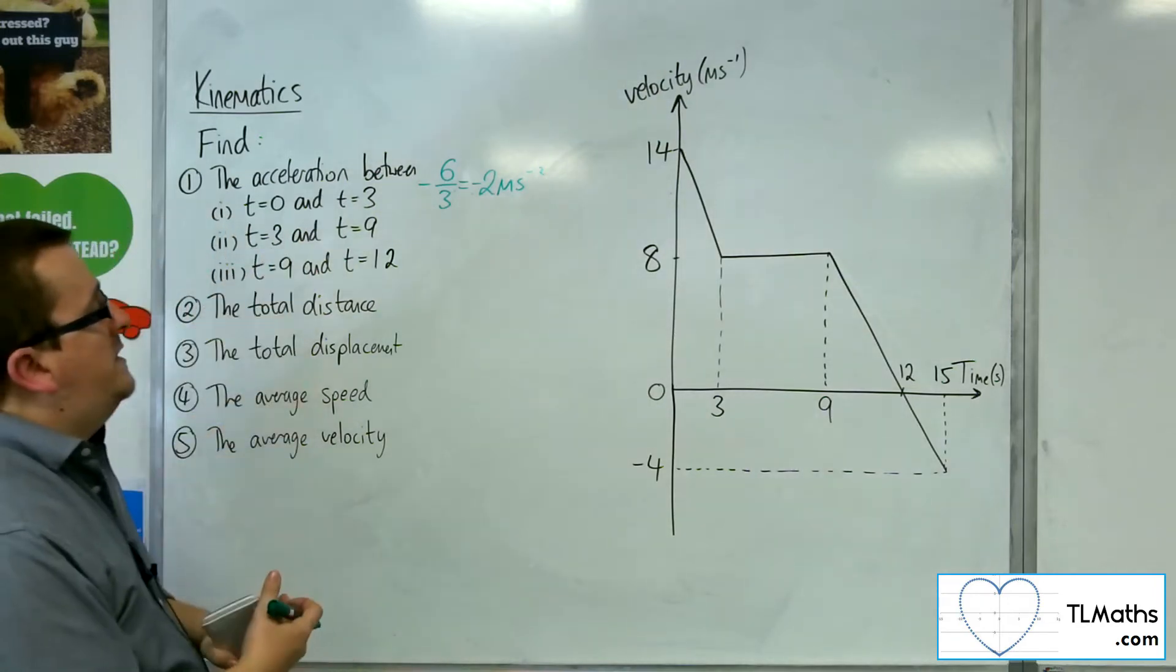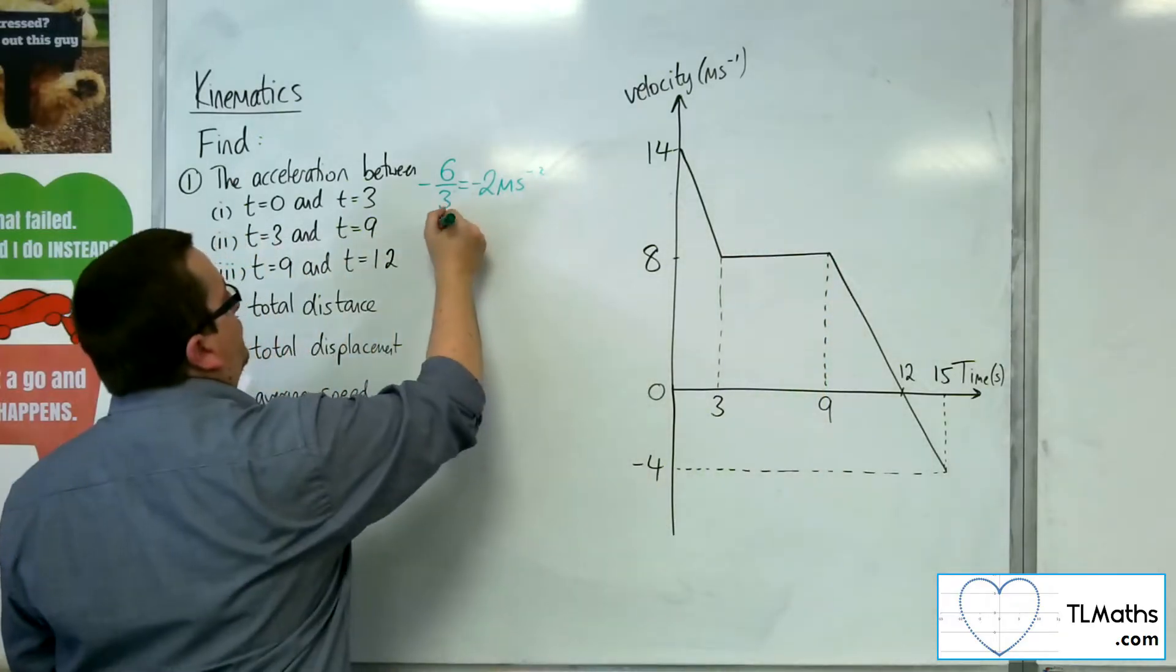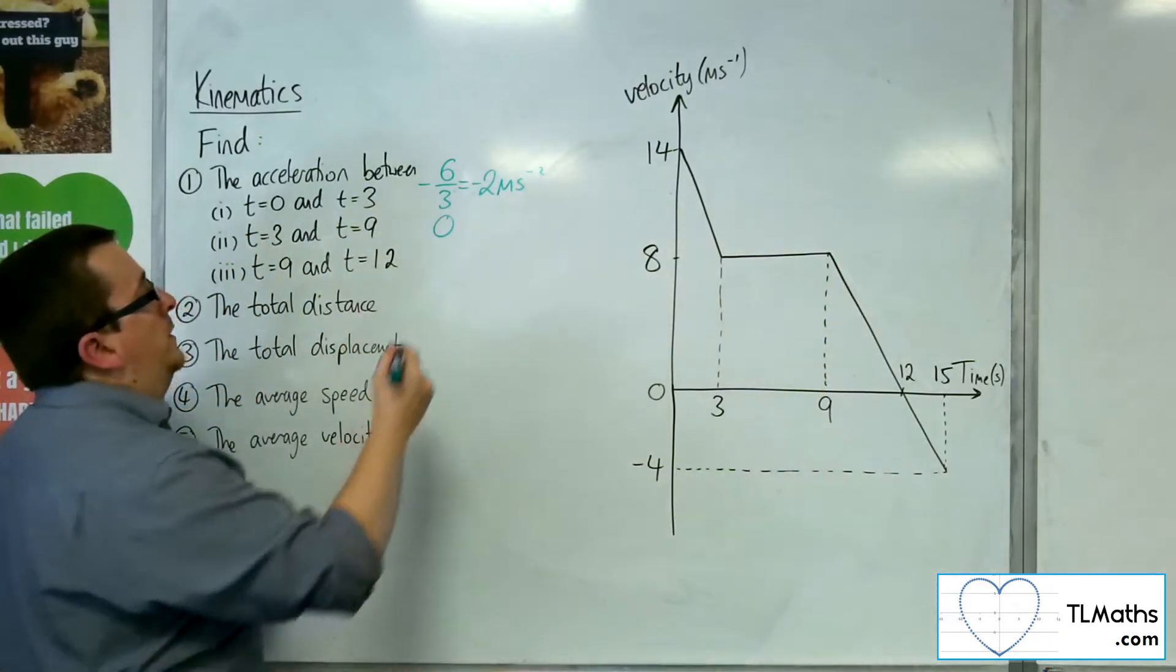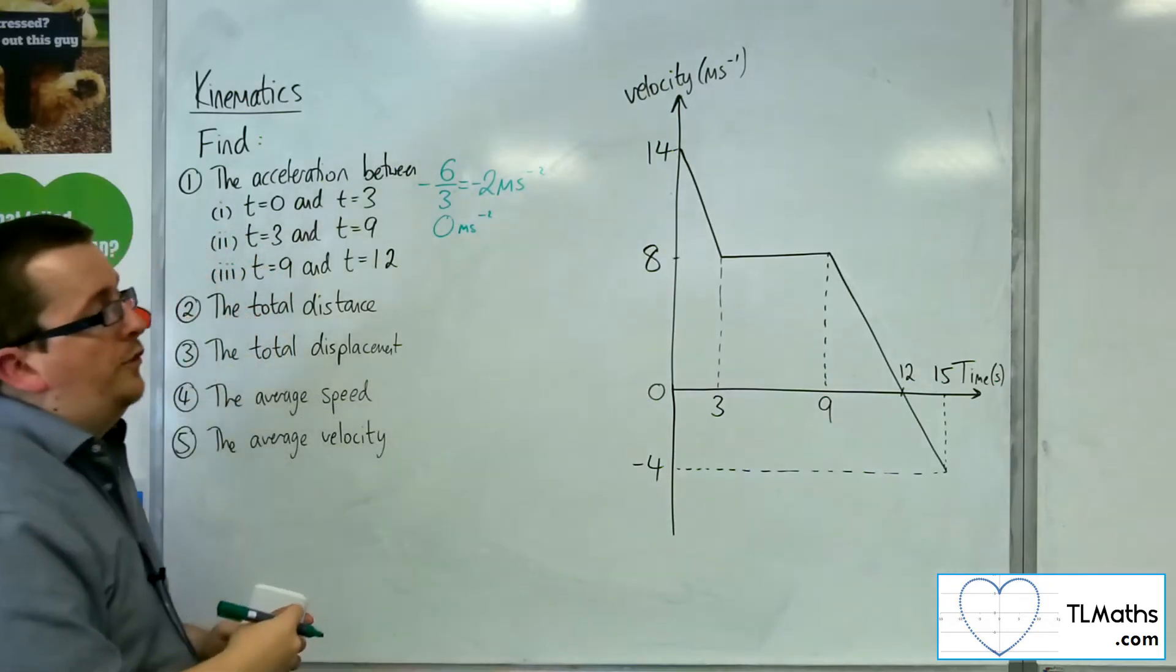Then T is 3 to T is 9, well, the acceleration is 0. In that case, so 0 metres per second per second, because the speed isn't changing.